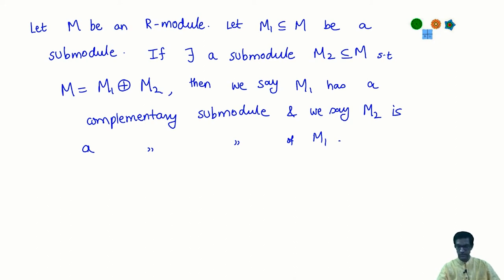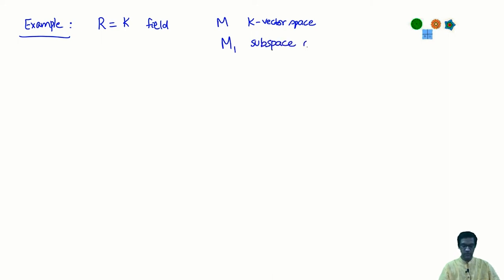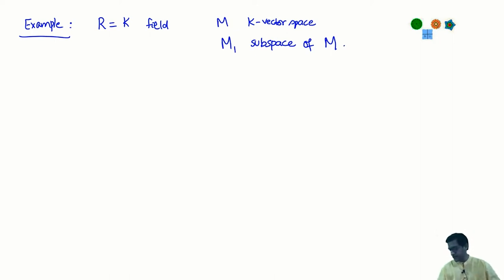The most familiar example is that of subspaces of vector spaces. This is the case when R is a field k, M is a k-vector space, and M₁ is a subspace. The question is: does M₁ have a complement — a complementary submodule? The answer in this case, when R is a field, is always yes. M₁ always has a complement.